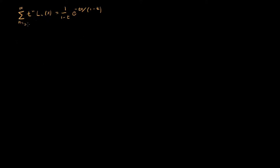If I take a derivative on both sides with respect to t, on the left-hand side that's easy — we just get n times t to the n minus 1 times L_n of x.